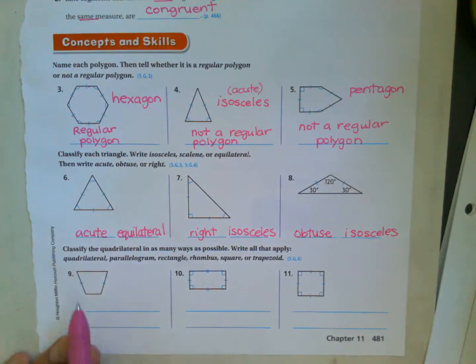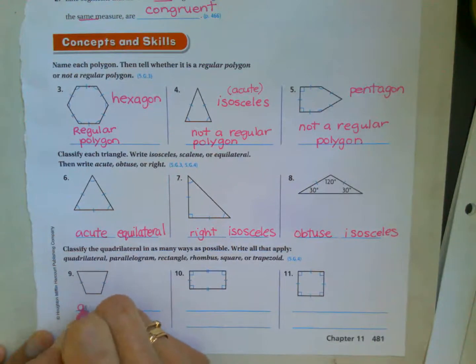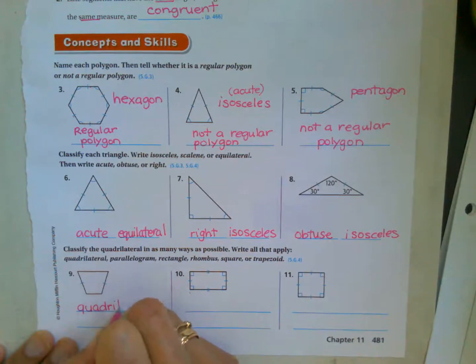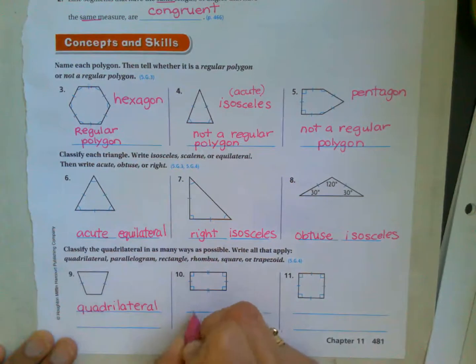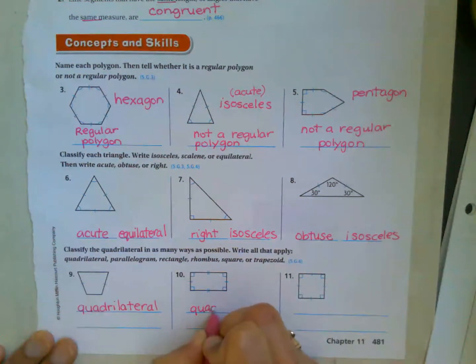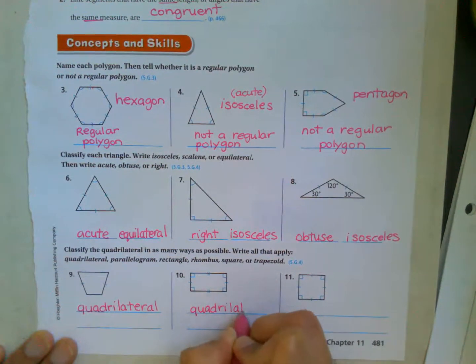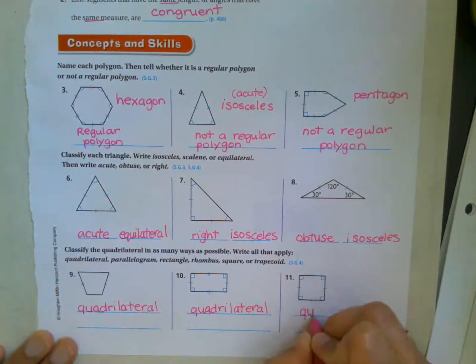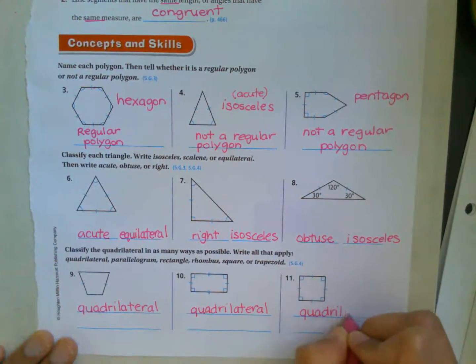Classify the quadrilaterals. So one, two, three, four. All of these have four sides. So automatically, I'm just going to write quadrilateral on all of them because they all are going to get the name. Quadrilateral, quadrilateral, four-sided shapes are all quadrilateral.